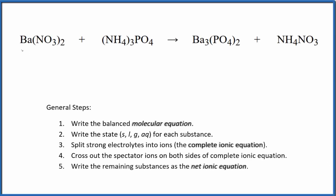To write the balanced net ionic equation for barium nitrate plus ammonium phosphate, first we need to balance the molecular equation. This is the molecular equation.